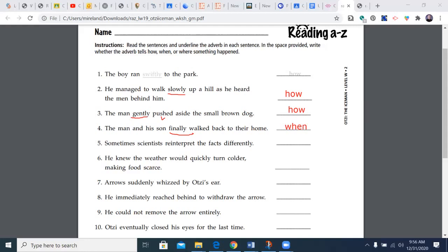One more: 'Sometimes scientists reinterpret the facts differently.' Our verb in this case is reinterpret, which means to rethink. We have to figure out which word goes with it. Scientists don't—I mean, they do—but scientists doesn't describe the verb. Sometimes does. And that gives you another example of when.